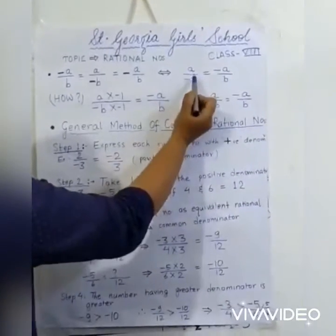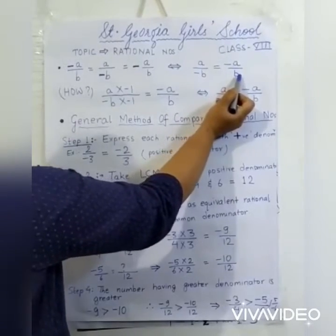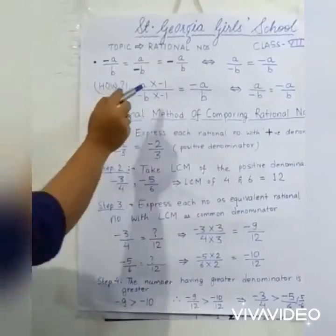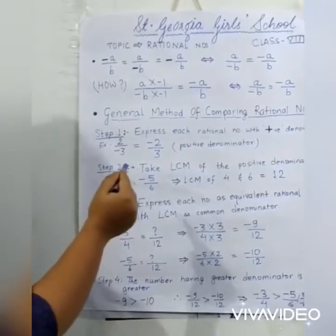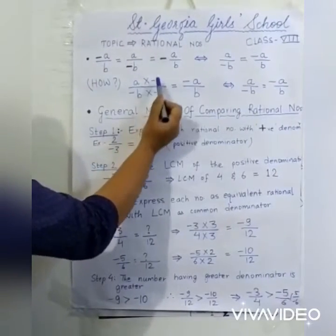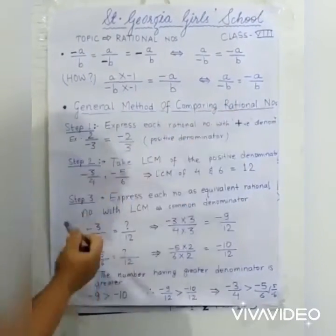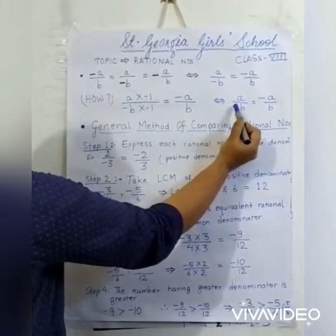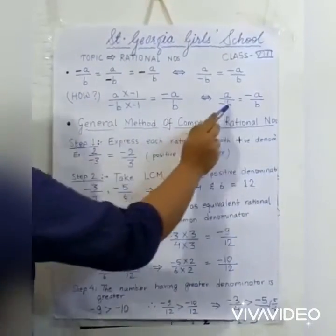If a negative denominator is given, like a by minus b, it can be converted to positive denominator form: minus a by b. We can verify this because equivalent rational numbers are obtained by multiplying numerator and denominator by the same number. If we multiply a by minus b by minus one, we get minus a by b. So when converting a negative denominator to positive, transfer the minus sign from the denominator to the numerator.